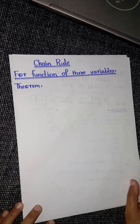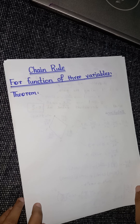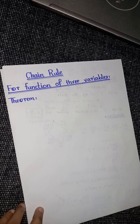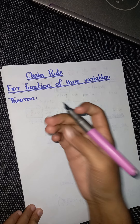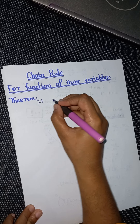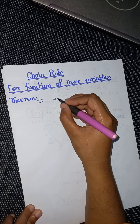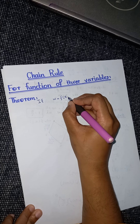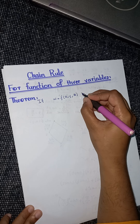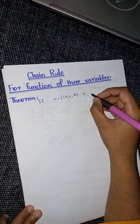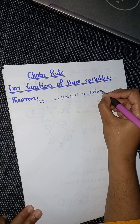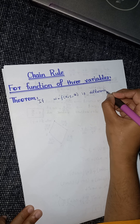Now, here we have a theorem. Let me write the statement of the theorem first, then I will explain it. The theorem says that if you have a function — a function of three variables x, y, and z — with the condition that this function is differentiable.